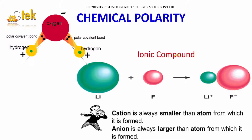The compounds — we will call them ionic compounds. The reason is the ions are joined to form the compound. A cation is always smaller than the atom from which it is formed, and an anion is always larger than the atom from which it is formed. The cation is positive and the anion is negative, and they form an ionic compound.